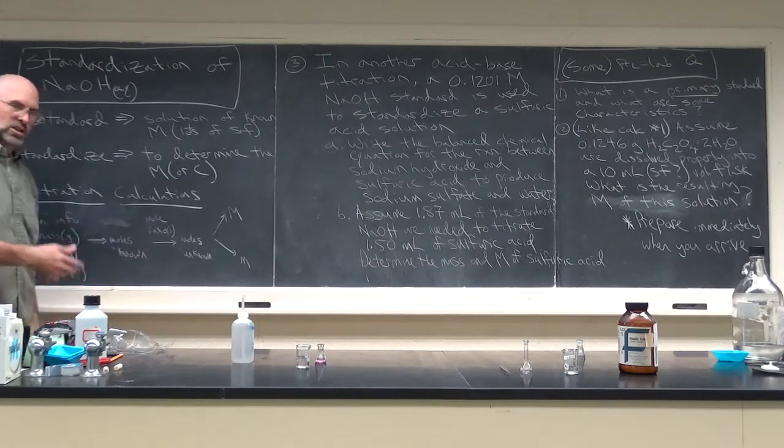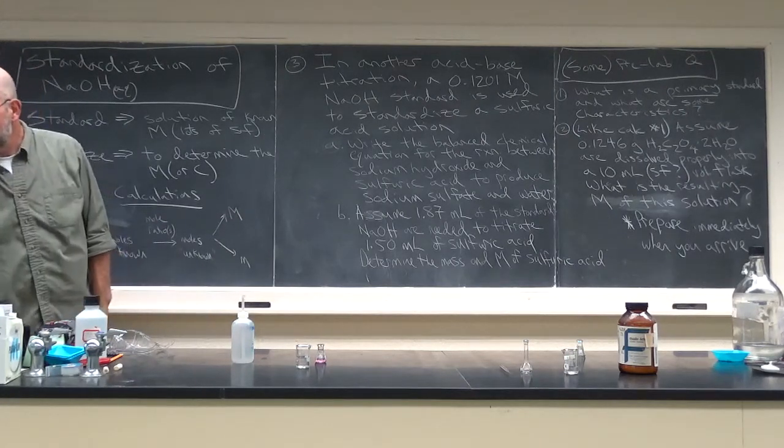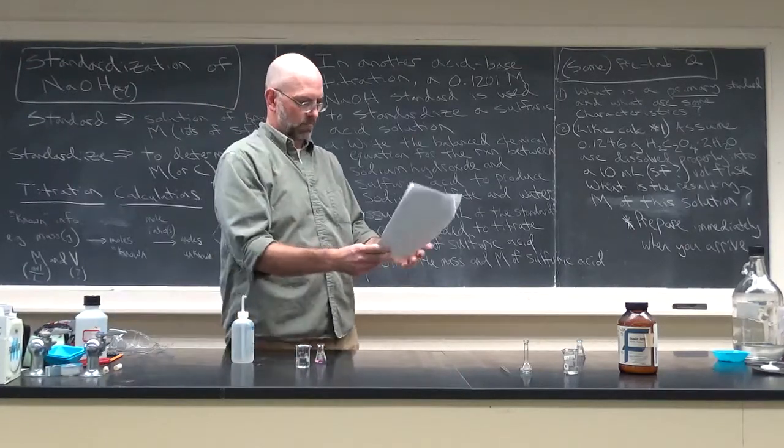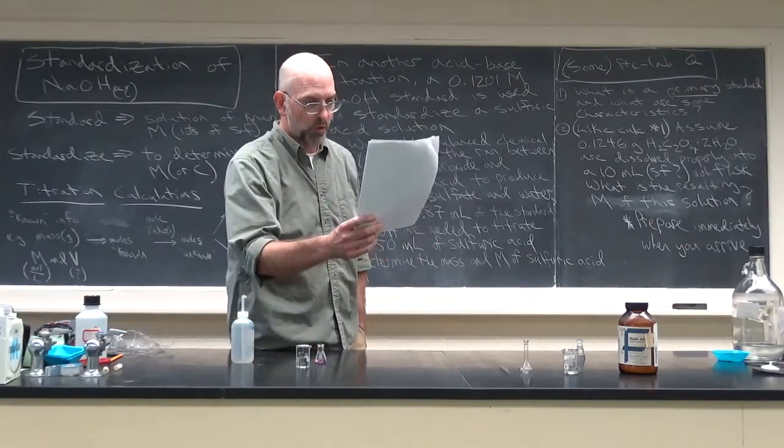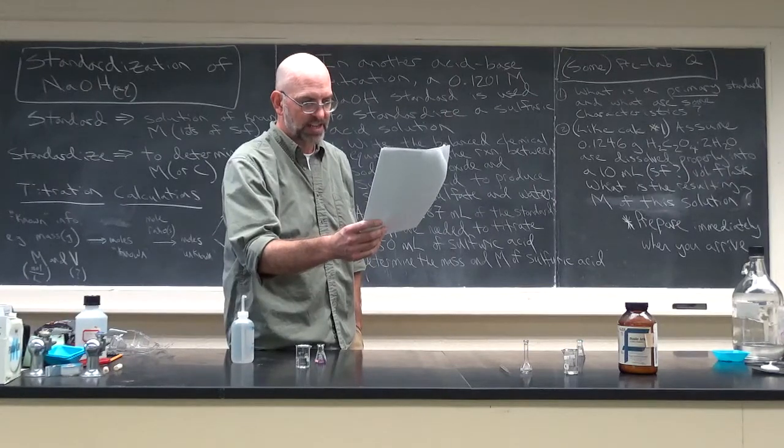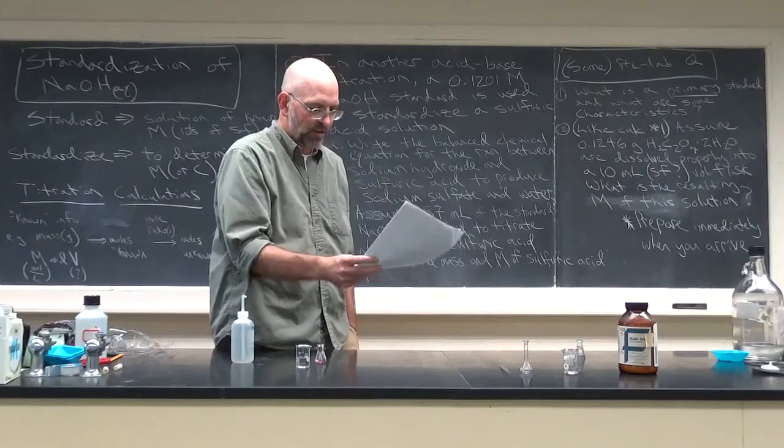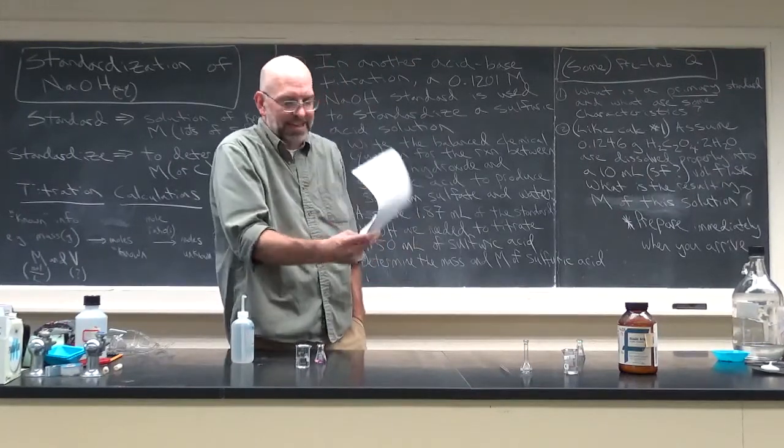If you have a balanced chemical equation, which you do in the lab, it's a two-to-one ratio between sodium hydroxide and oxalic acid dihydrate. I'm not going to write that up here. It's already balanced for you. You can balance that. It's not that hard.